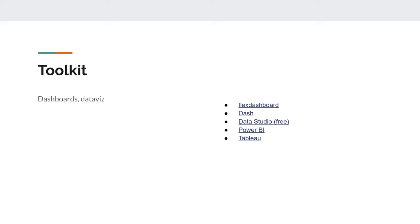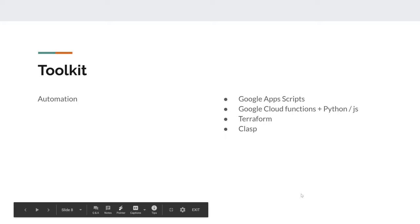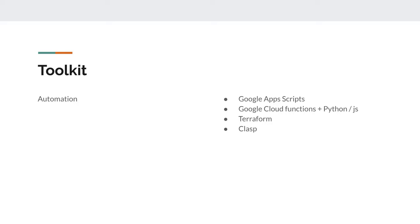Tableau also has integration with Python and R, so you can do data preparation in those languages and feed results into Tableau. For automation — when you write R or Python code and want it to run every hour, day, or week — there are tools like Google Apps Scripts, which are based on Google products like Sheets, Docs, and Calendar, and run on JavaScript.